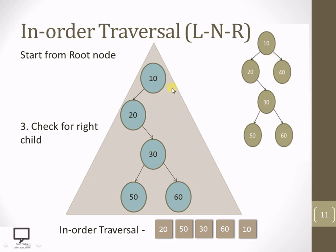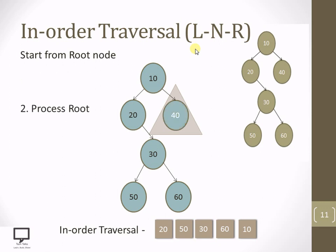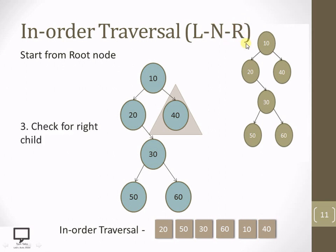Here you can see that the right child is present. Now what I need to do — I need to step down to the right child, and now I am making this 40 as the root node. After making 40 as the root node, again for this root node let's check whether 40 is having a left subtree or not. 40 is not having a left subtree, so skip the step and process 40. I am changing the color of 40 and I have processed 40 in in-order traversal. After processing the root node, the next step is to check for a right child — whether 40 is having a right child. No.